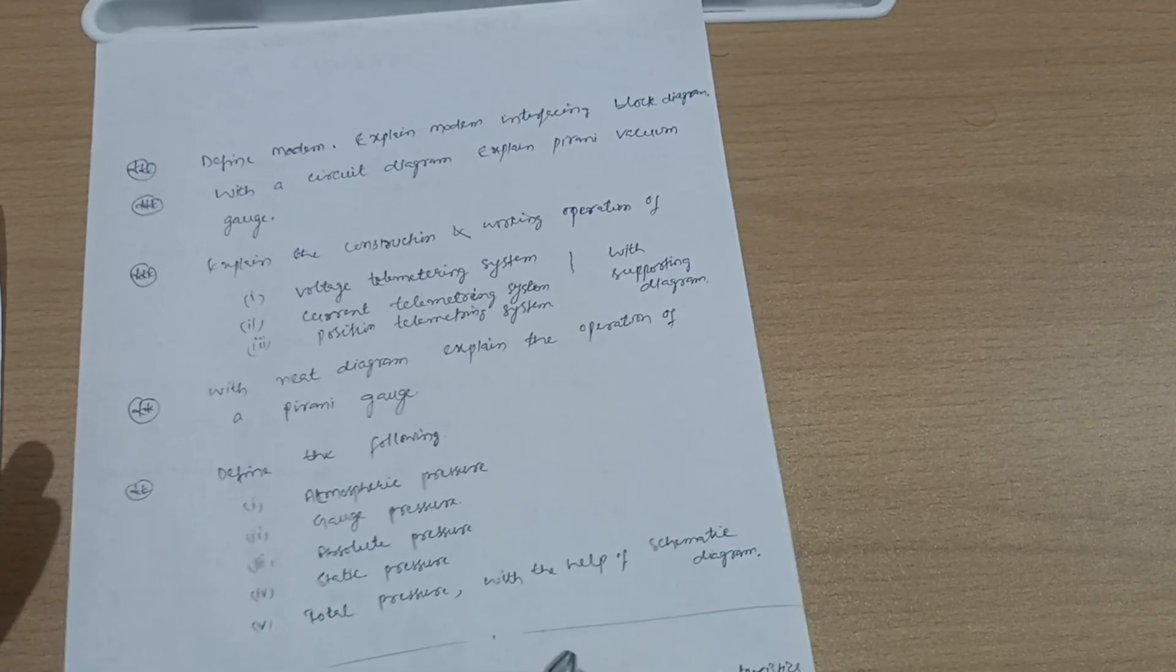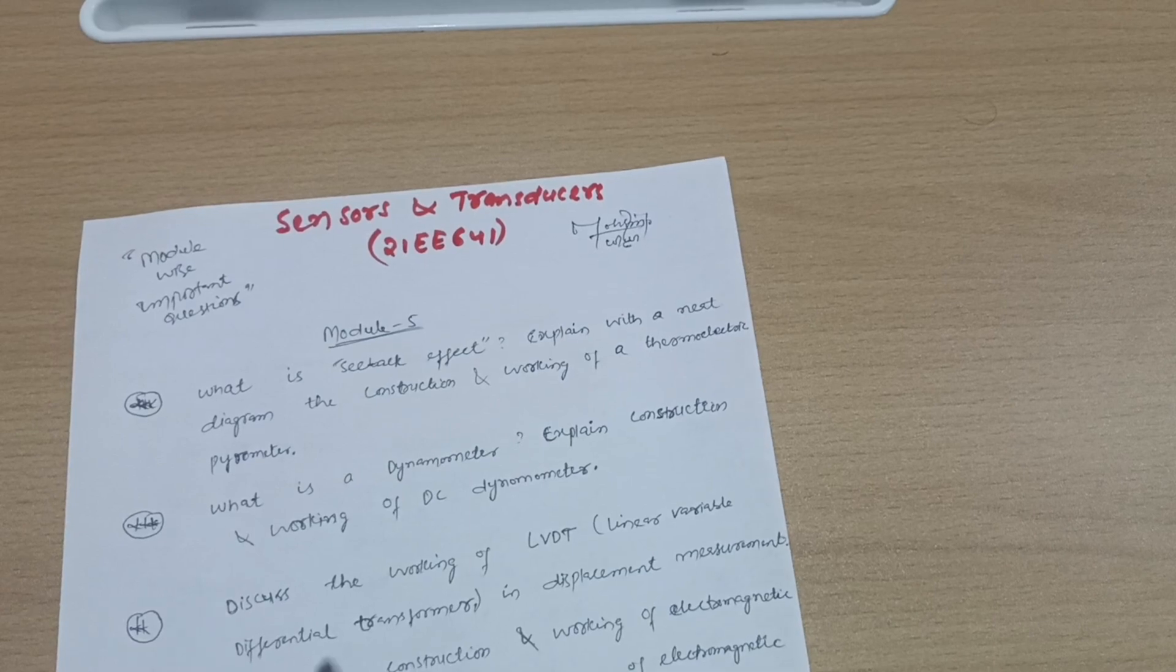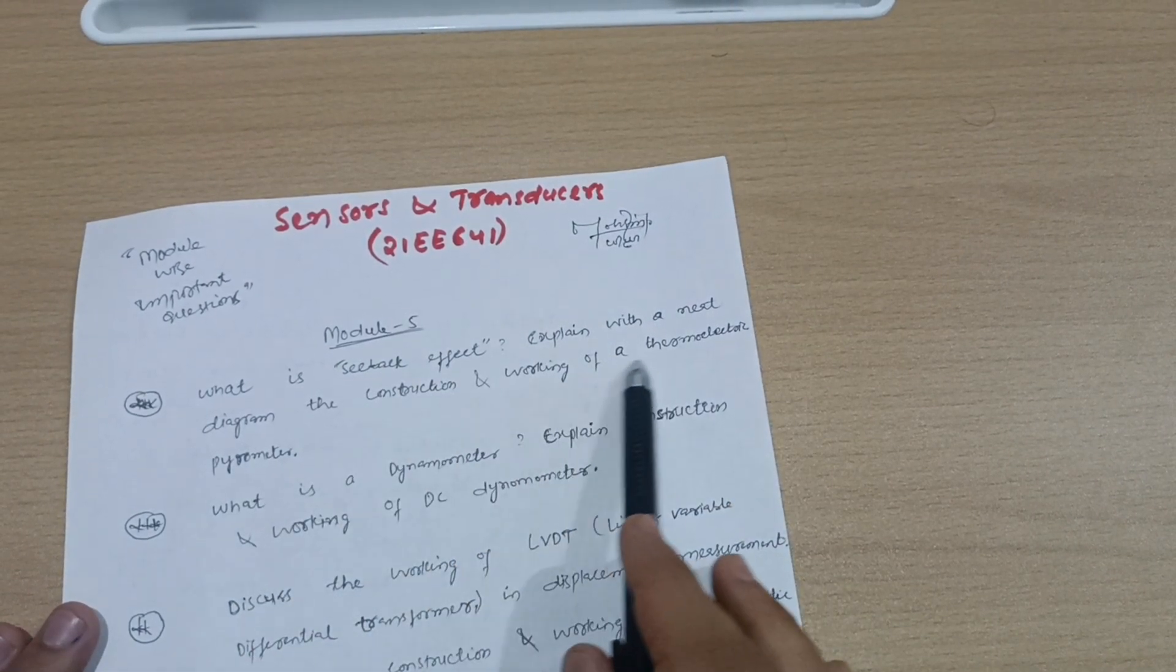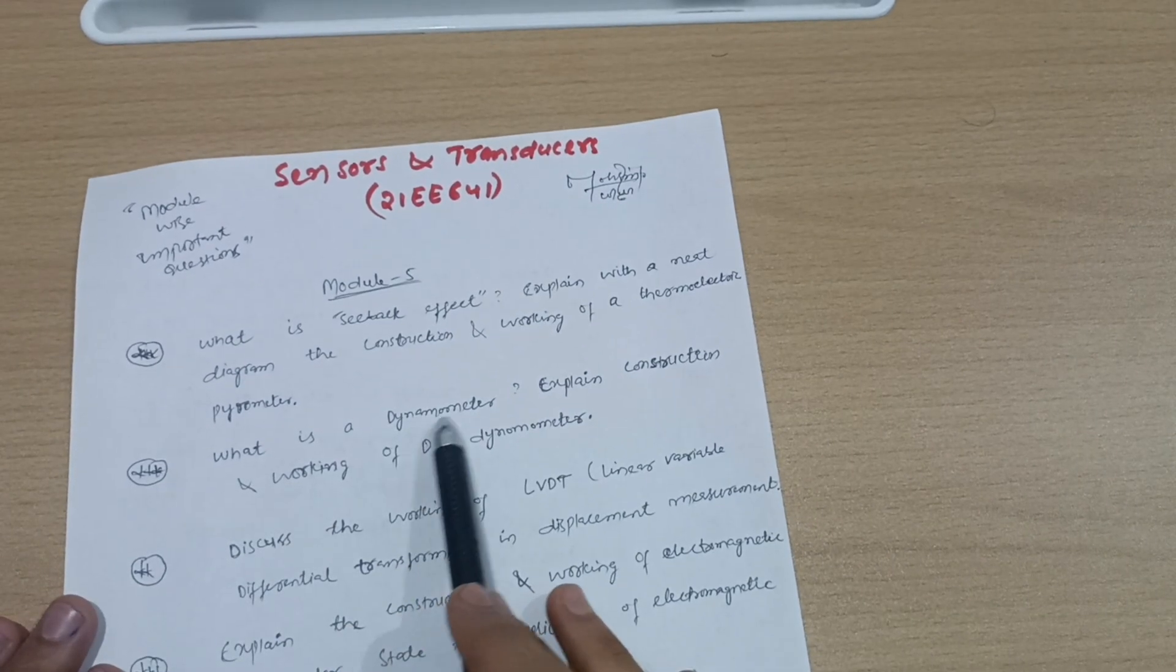This is all about Module 4. Now let us discuss Module 5. What is Seebeck effect? Explain with a neat diagram the construction and working of a thermoelectric pyrometer. What is a dynamometer? Explain construction and working of DC dynamometer.